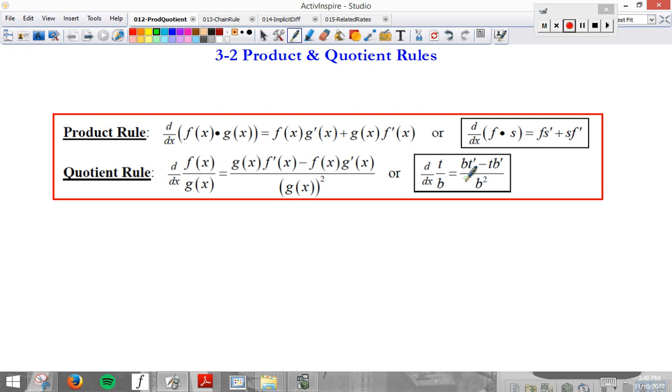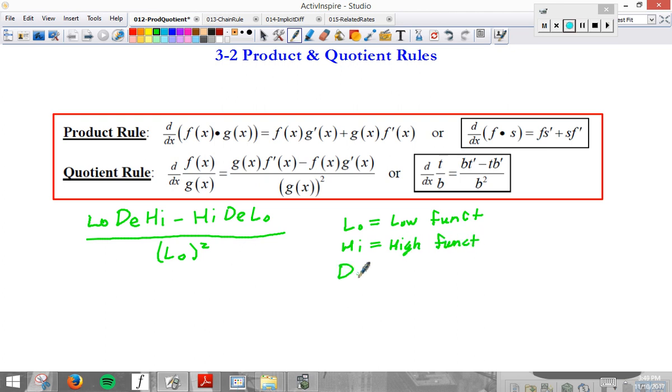The way I was taught growing up, the way it's helpful to memorize, the way I still say it every time in my head, good or bad, it's low d high minus high d low, all over low squared, and away we go. Where low means the bottom function, the low function, high means the high function, and d stands for derivative.